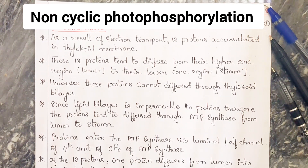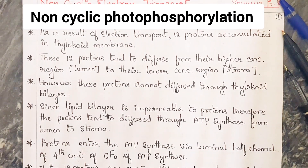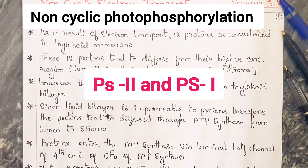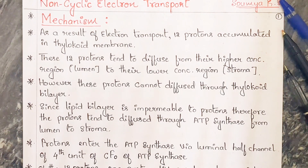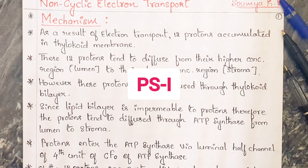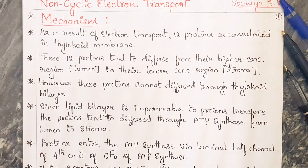First we will look at the definition here. Non-cyclic photophosphorylation is nothing but a photophosphorylation in which the electron molecules which are excited are not going to return back. It occurs when there is bright sunlight and both photosystem 2 and photosystem 1 are involved. In cyclic electron transport system, photosystem 1 is involved, and this non-cyclic photophosphorylation has another name — it is called the Z scheme.